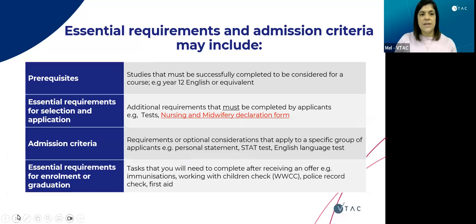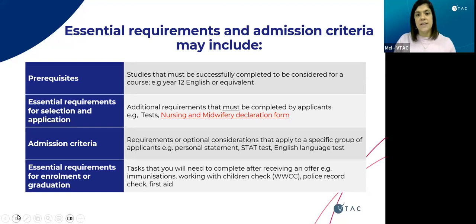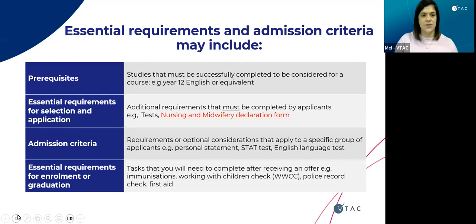There are essential requirements and admissions criteria including prerequisites, tests, and the nursing and midwifery declaration form, as well as different admissions criteria. There are also essential requirements for enrolment or graduation — these may be things you're required to do to successfully complete the course as opposed to just be admitted. So things like immunisations, a working with children check, police check, and first aid.